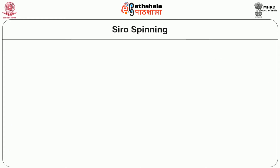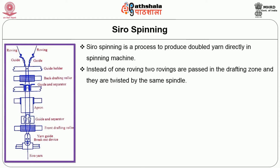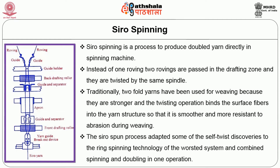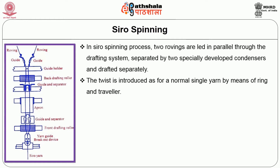Next is the zero spinning process, which produces doubled yarn directly in a spinning machine. Instead of one roving, two rovings are passed in the drafting zone and they are twisted by the same spindle. Traditionally, two-fold yarns have been used for weaving because they are stronger and the twisting operation binds the surface fibers into the yarn structure so that it is smoother and more resistant to abrasion during weaving. The zero spun process adapted some discoveries to the ring spinning technology of the worsted system, combining spinning and doubling in one operation. Two rovings are led in parallel through the drafting system, separated by two specially developed condensers and drafted separately. Twist is introduced as for a normal single yarn by means of ring and traveler.